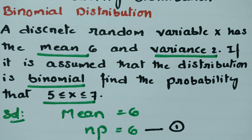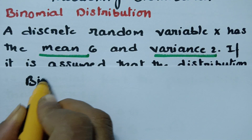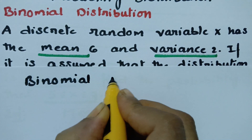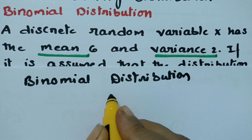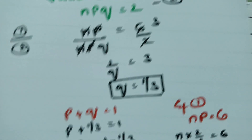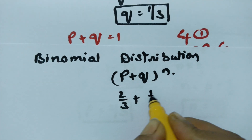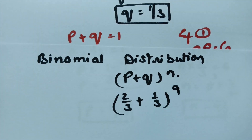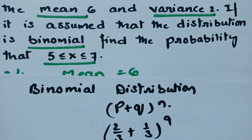After getting N, P, and Q, the binomial distribution is written as (P + Q)^N, where P = 2/3, Q = 1/3, and the whole expression is raised to the power 9. Now we have to calculate P(5 ≤ X ≤ 7).